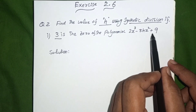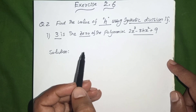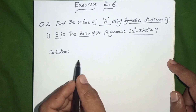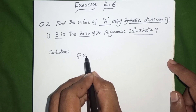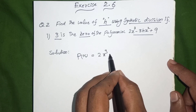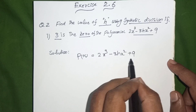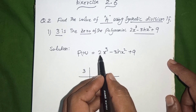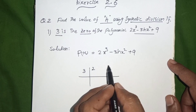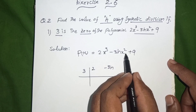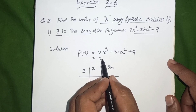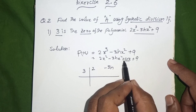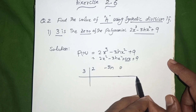If 3 is the zero of the polynomial, first of all by using synthetic division we find the coefficients and remainder. We have a polynomial P(x) = 2x³ - 3Hx² + 9. Since there is no x term, we write it as 2x³ - 3Hx² + 0x + 9. The constant term is 9.